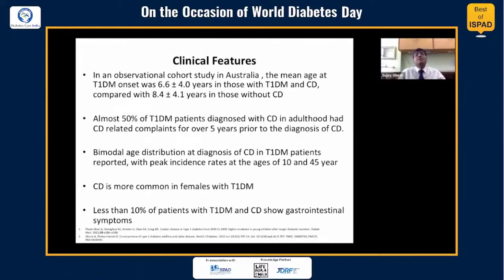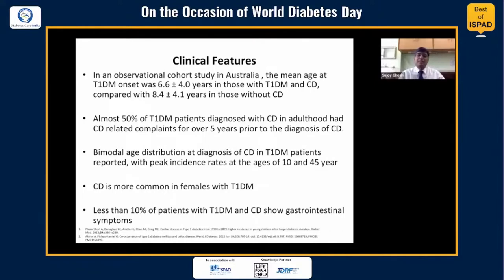In terms of clinical features, an Australian study suggests that those with celiac in type 1 tend to have an earlier age of onset compared to older patients with type 1 who often do not have celiac. About 50% of type 1 patients diagnosed with celiac in adulthood had celiac disease-related complaints for about five years before the diagnosis. There seems to be a bimodal distribution of celiac at ages 10 and again at about age 45, and it's more common in women and girls. Less than 10% of patients with type 1 diabetes and celiac disease actually have gastrointestinal symptoms.